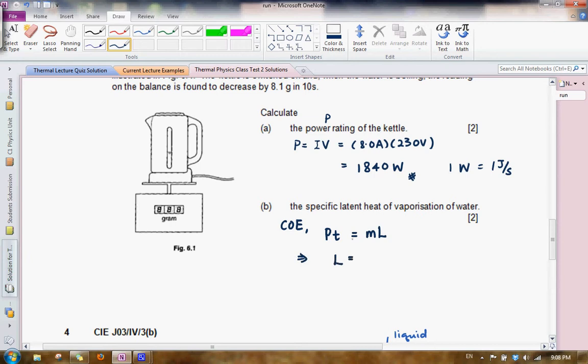So in this question, we are interested in L. Let's make L the subject of our formula. Then what we will have is L equals PT over M. All that's left for us to do now is to substitute the values into the equation. We have the power to be 1,840 watts as calculated above, and in a time of 10 seconds, 8.1 grams has evaporated. So 8.1, just remember to work in SI units, is 8.1 times 10 to the power of minus 3 kg.